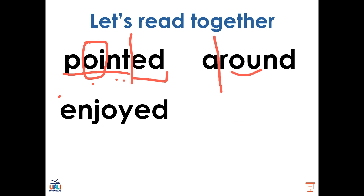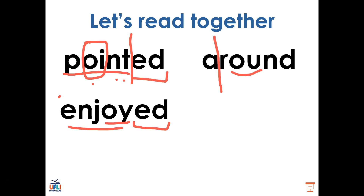This word also has an inflectional ending — we have that ED ending here. And we have the OY working together. OY says OI. So we can take it one bit at a time: E-N-J-O-Y, ENJOY — that's our base word. Then we add the ED: ENJOYED. So we went from the base word ENJOY to the word ENJOYED.